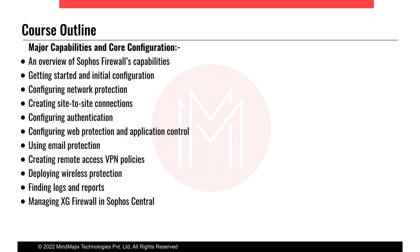This course contains the major capabilities and core features like the overview of the firewall, how we can initially start the configuration, how we configure the network, and how we can proceed with other configurations as per customer requirements. For example, if they have different sites, how we can connect site-to-site with our XG firewall, how we can go for authentication, and if any restrictions are required — like blocking spam sites, malicious sites, or social networking sites — how we can do that. There is also a major concern of email protection in the corporate network, like blocking spam mails.